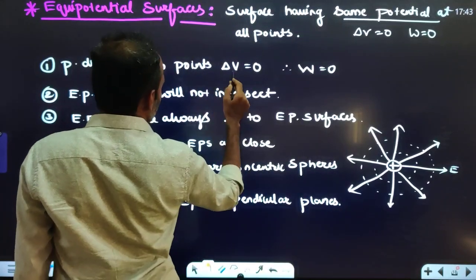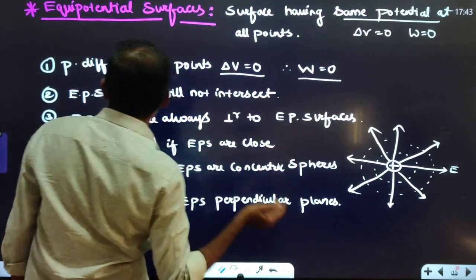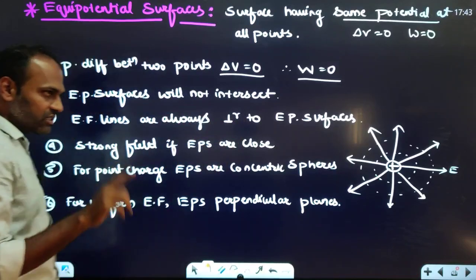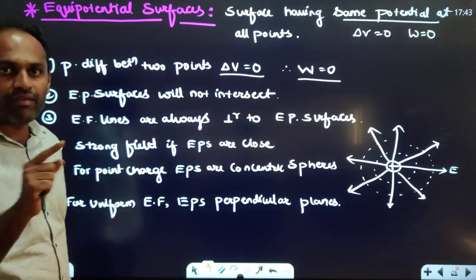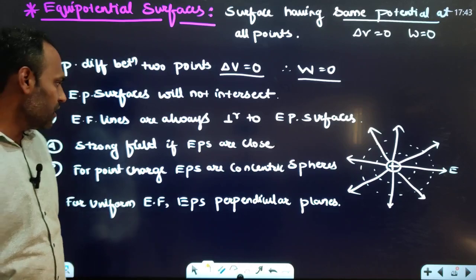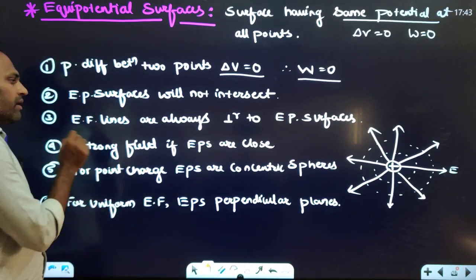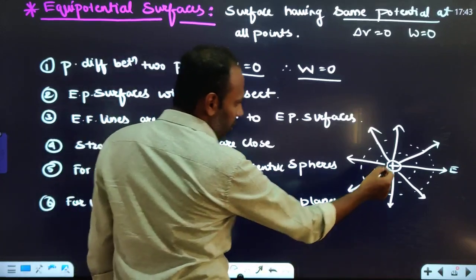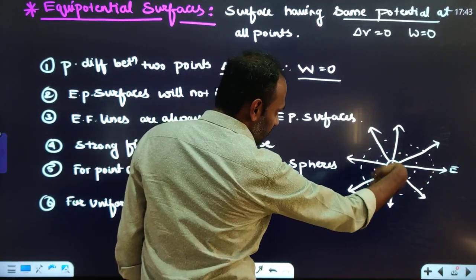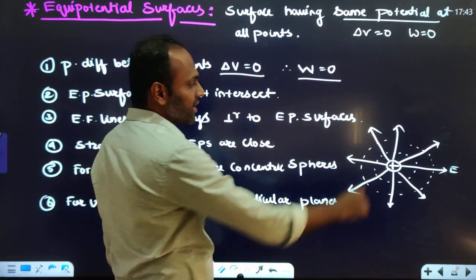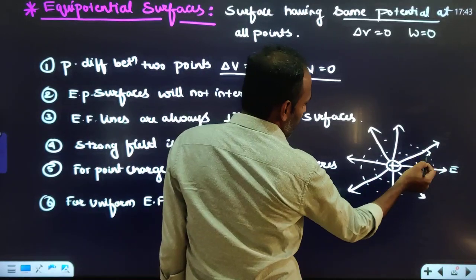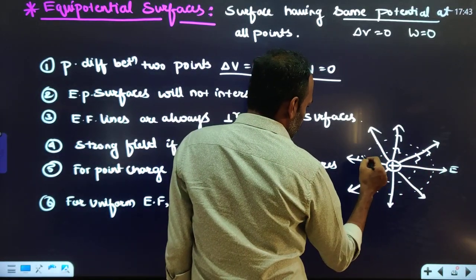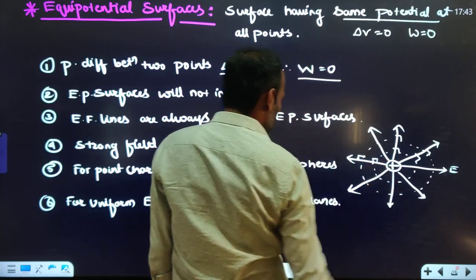Key properties of equipotential surfaces: First, potential difference is zero, therefore work done is zero. Second, equipotential surfaces will not intersect — if they did, you would get two different potentials at one point, which is not possible. Third, electric field lines are always perpendicular to equipotential surfaces. For a point charge, the equipotential surfaces are concentric spheres.